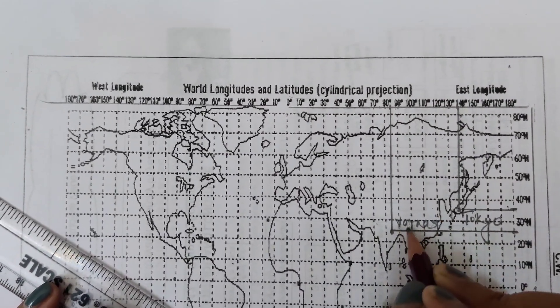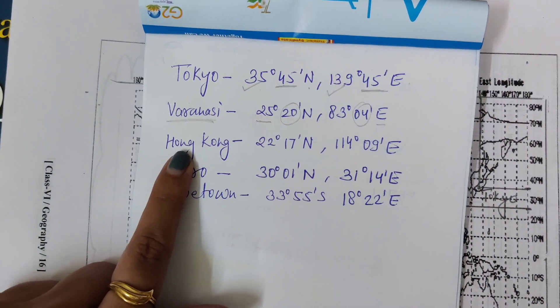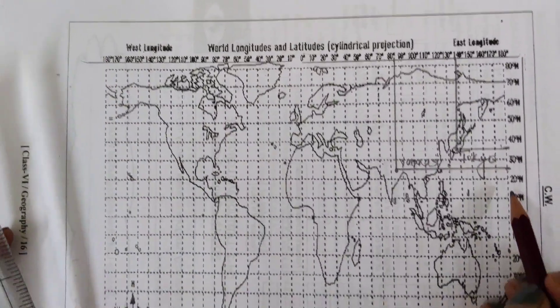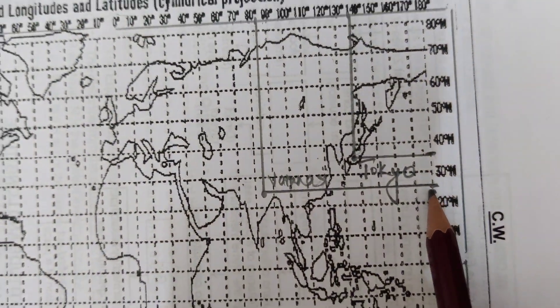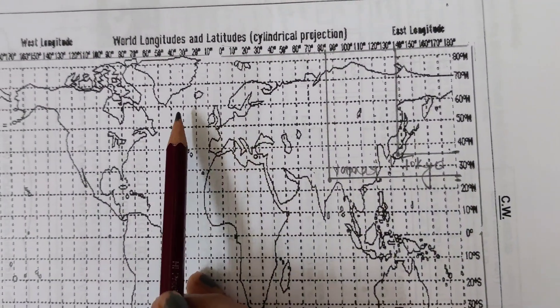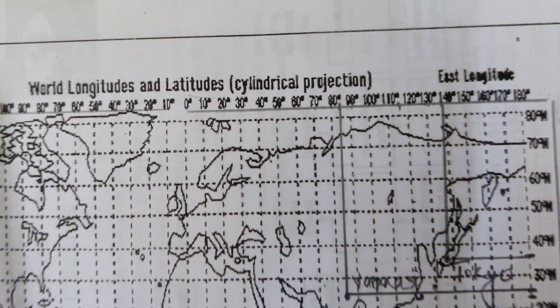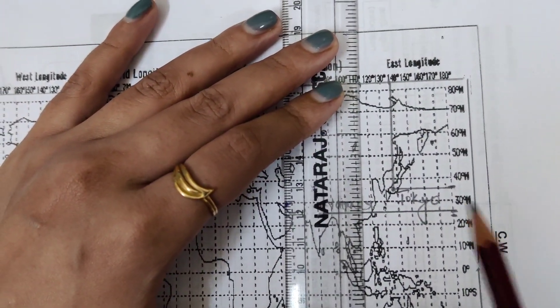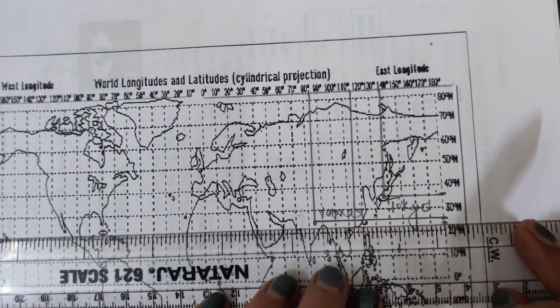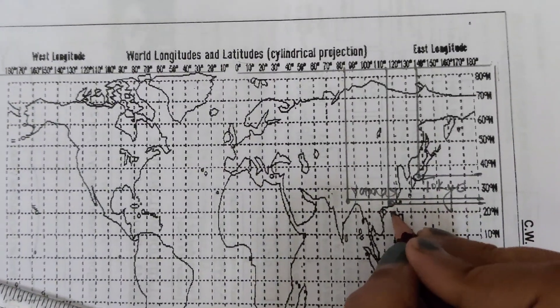The next place is Hong Kong: 22 degrees north and 114 degrees east. Mark 22 degrees north here, and 114 degrees east here. Now let's intersect the lines. This will be Hong Kong.